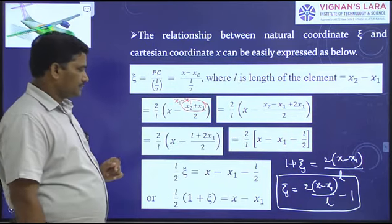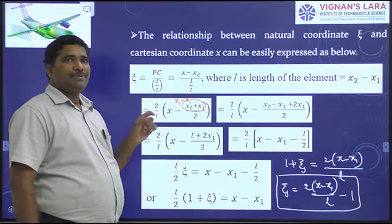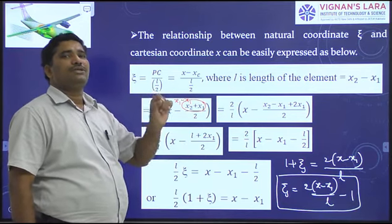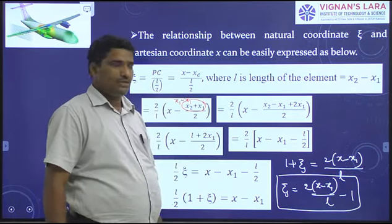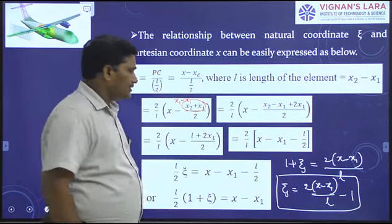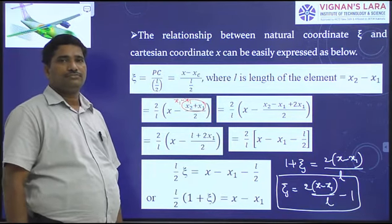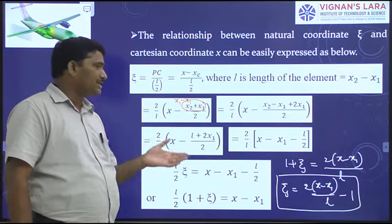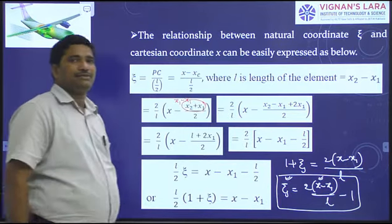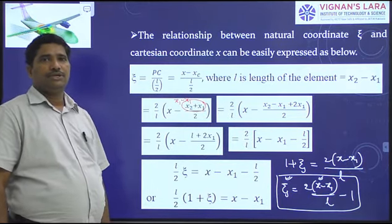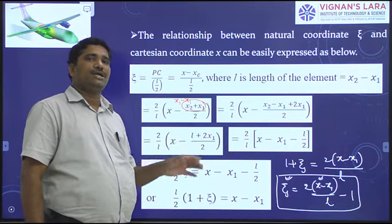This is the expression for the natural coordinate ξ = 2(x − x1)/l − 1. Observing this expression, l (length of the element) and x1 (coordinate of node 1) do not change. The only variable is x. Therefore ξ varies with respect to x linearly — the variation between ξ and the global coordinate x is linear, so plotting ξ against x gives a straight line.